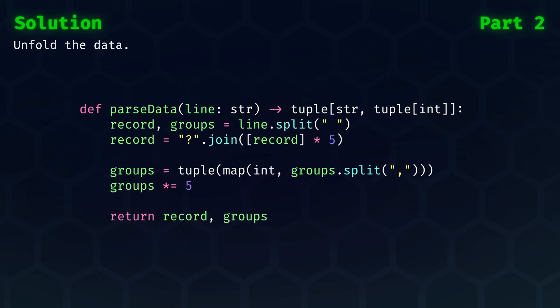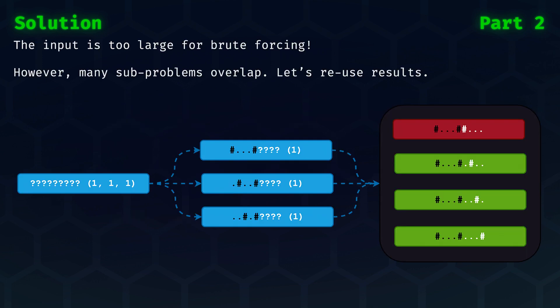The solution outline is the same, but of course, we need to unfold the data. So in parse data, we now multiple the record and groups by five, taking into consideration the symbols with which we should join them where necessary. The next step is to see how we deal with this large input. It is simply too large for naively brute forcing with our previous algorithm.